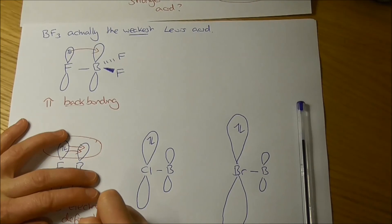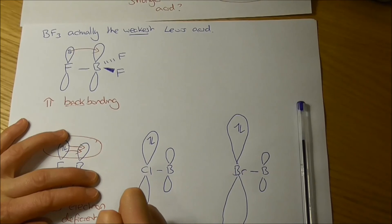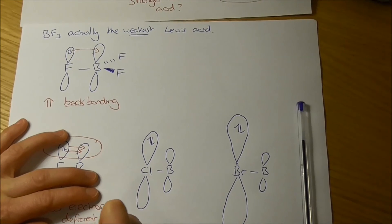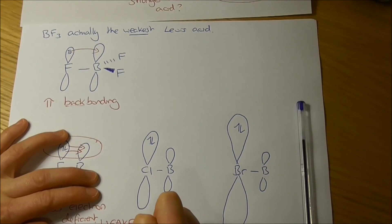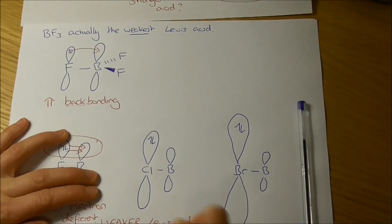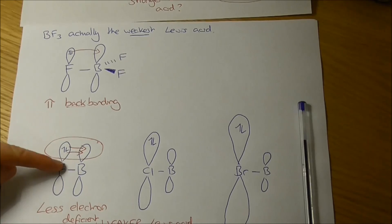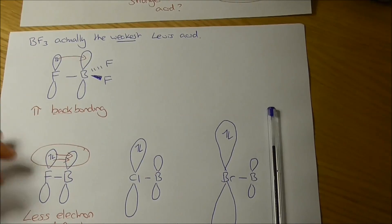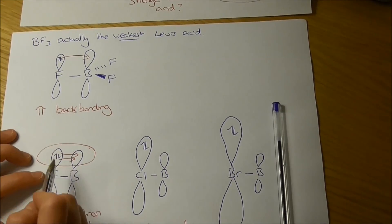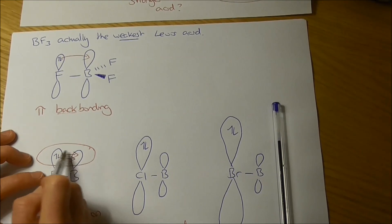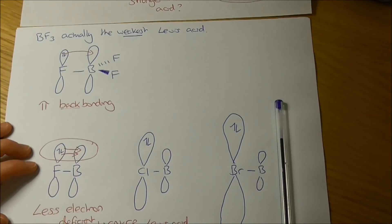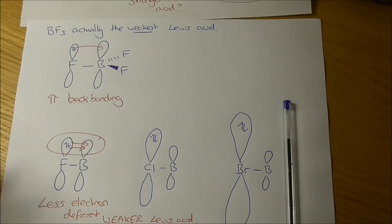So it's actually making it a weaker Lewis acid. So this is going against electronegativity. The fluorine, in terms of electronegativity, is going to be the strongest at pulling electron density away, but it's also the strongest at donating electron density back via this pi bonding.